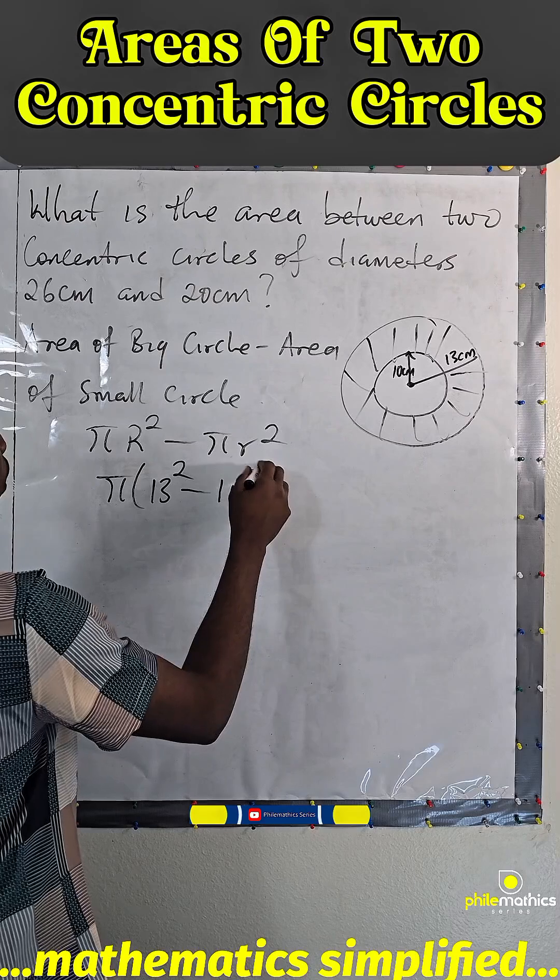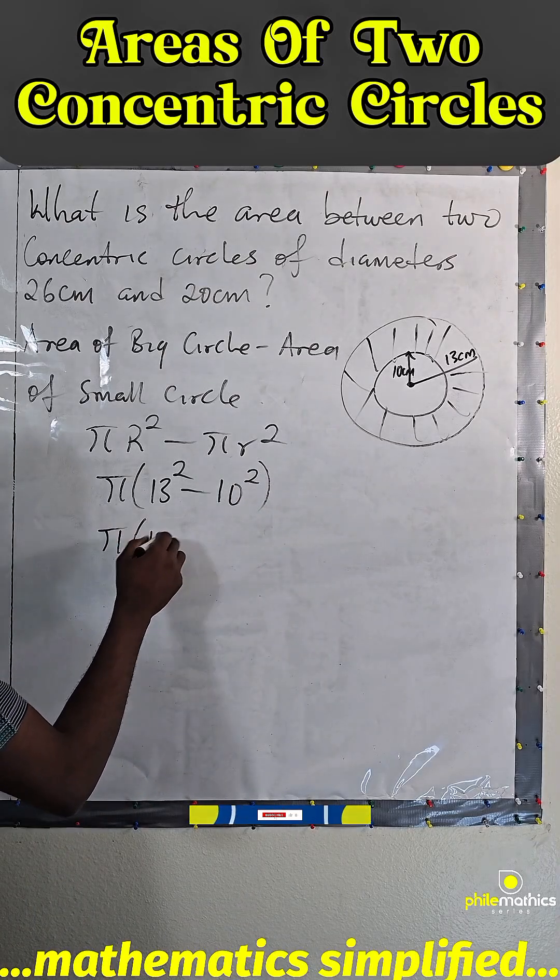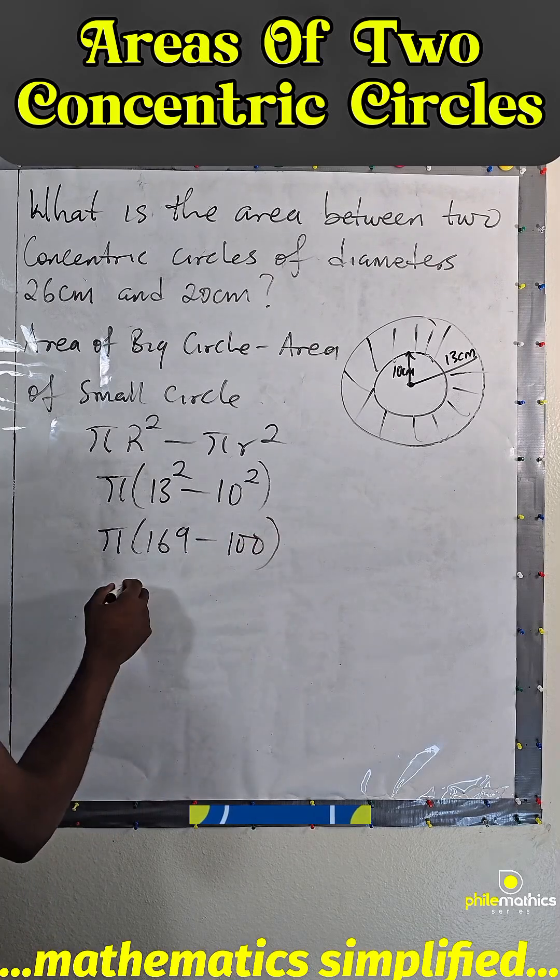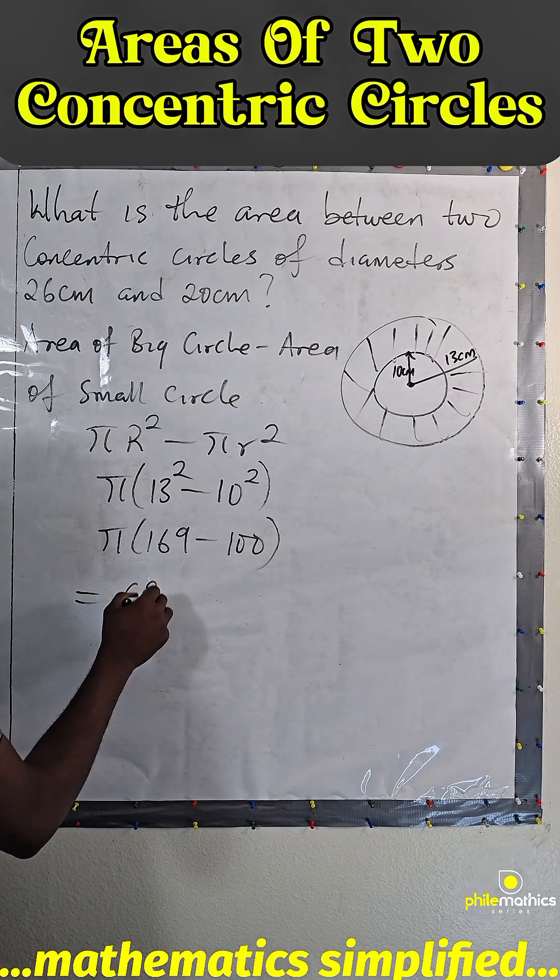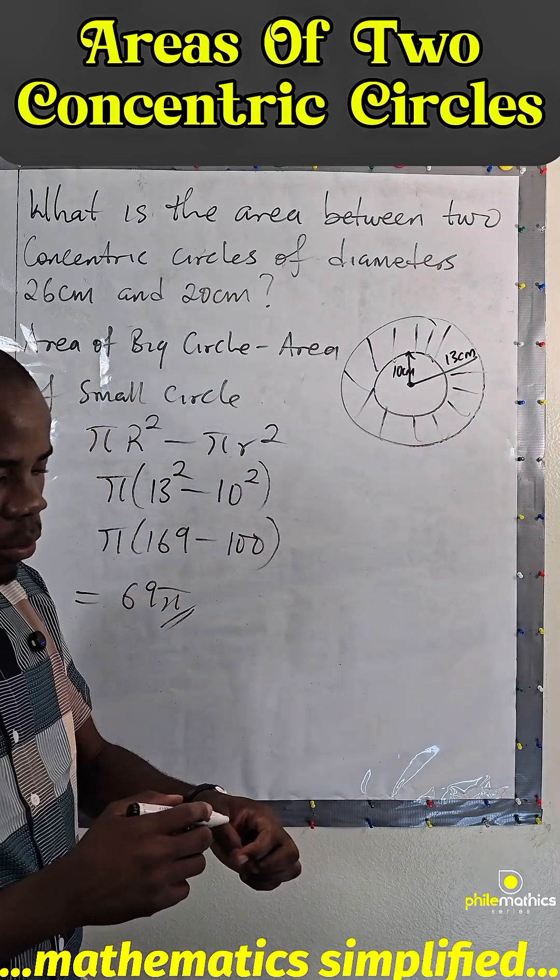13² is 169 and 10² is 100. If we subtract, we'll have 69π. So this is the area of these concentric circles.